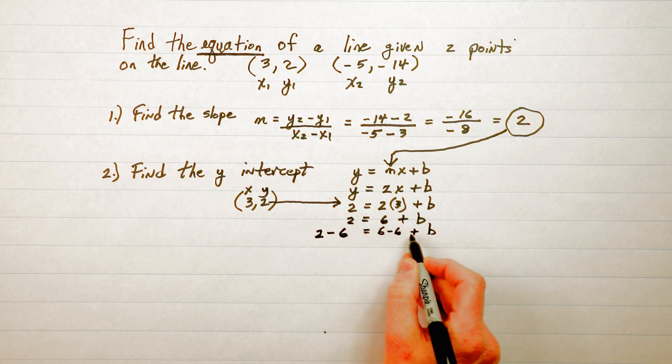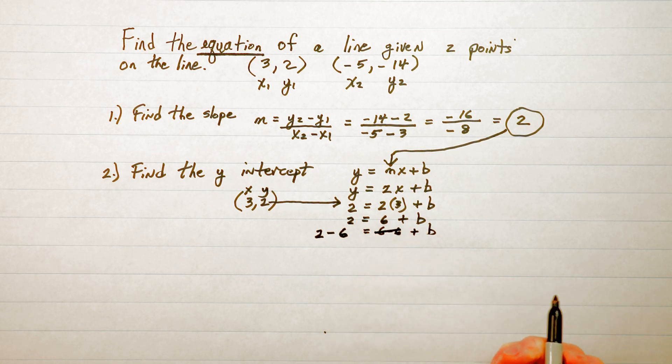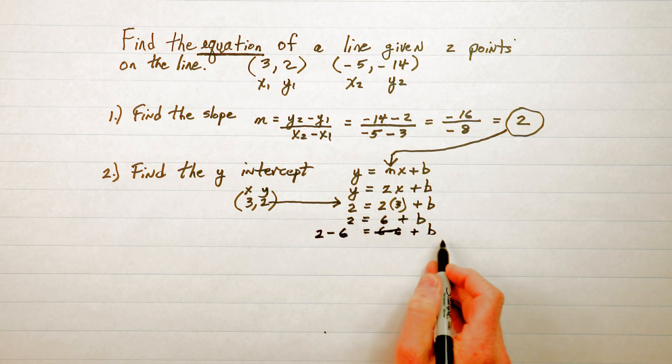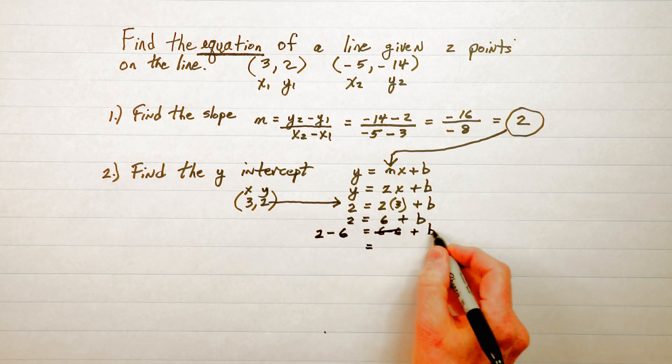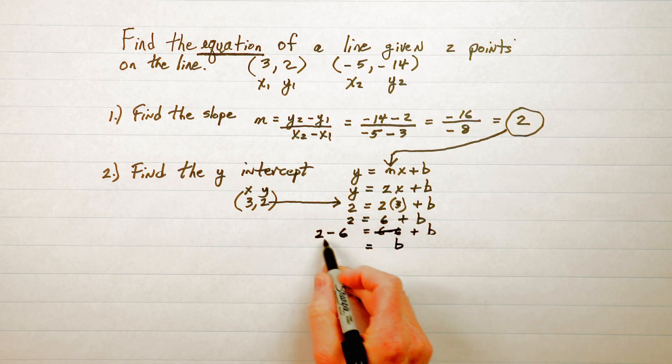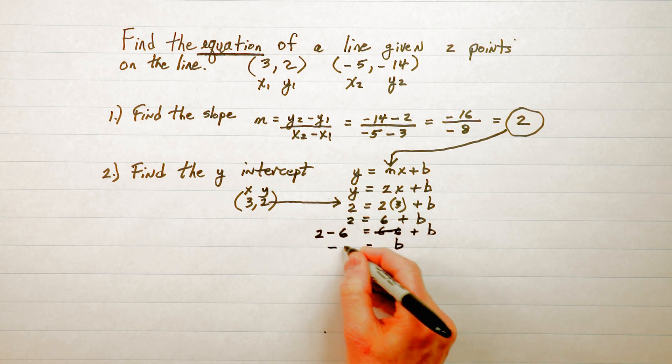On the right side of the equation these cancel out or they give us 0 so we don't need those anymore and you bring down the b. 2 subtract 6 is -4.